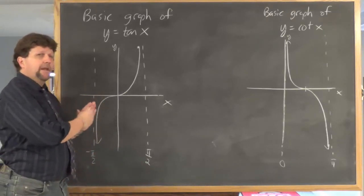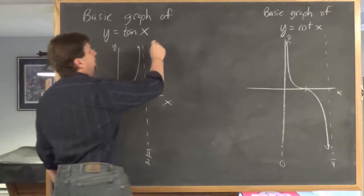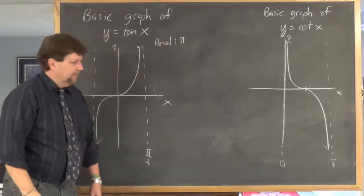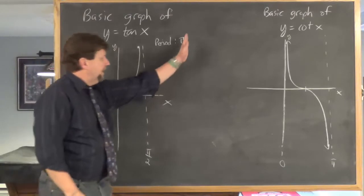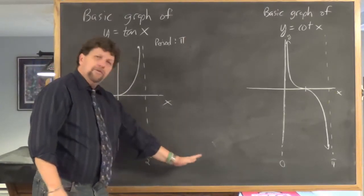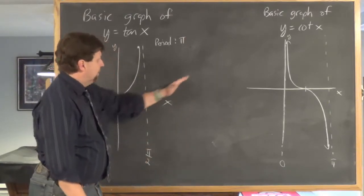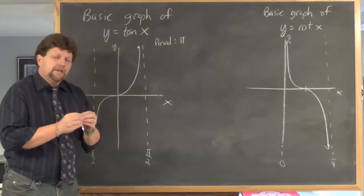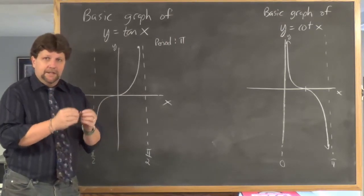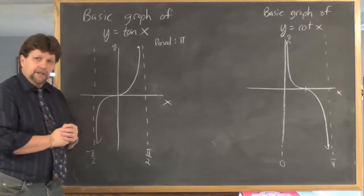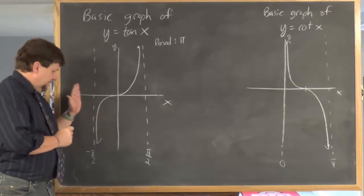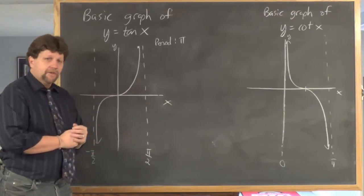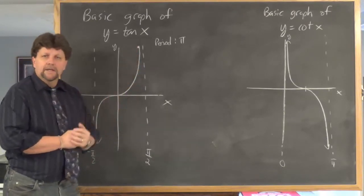Since the period runs from negative pi over 2 to pi over 2, the period is pi. So if you wanted to graph this over two periods, you'd make another vertical asymptote out at 3 pi over 2 and sketch that same shape. When you hear tangent x and its basic graph, I'd like this to pop into your head: a left vertical asymptote at negative pi over 2, a right vertical asymptote at pi over 2, and always increasing behavior.